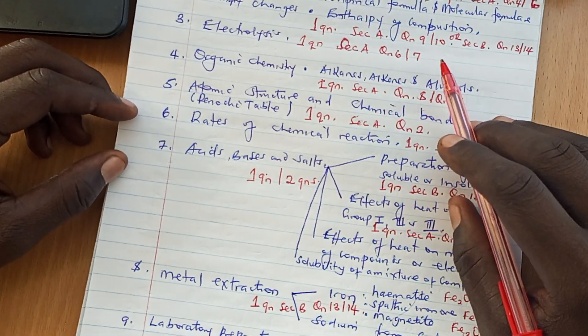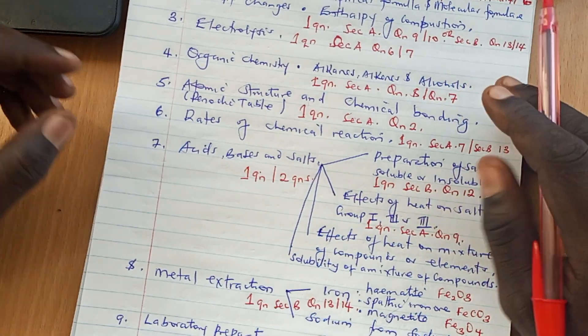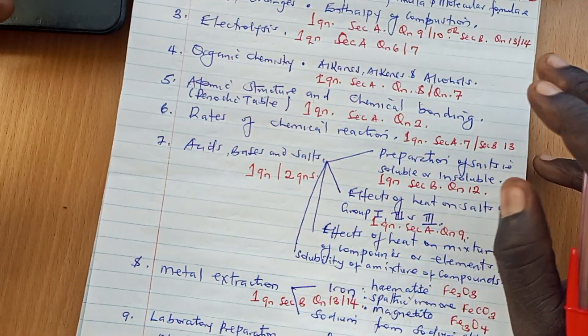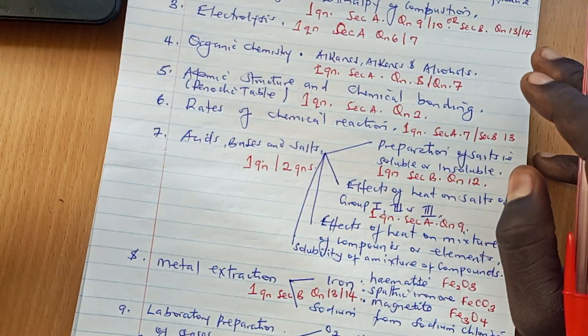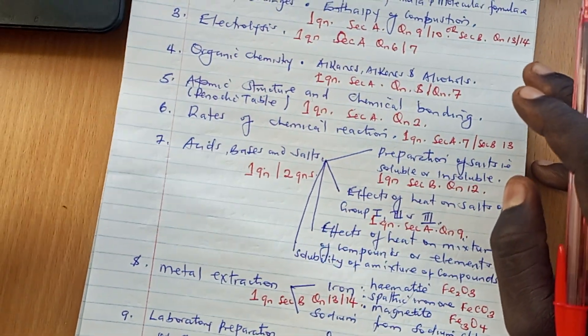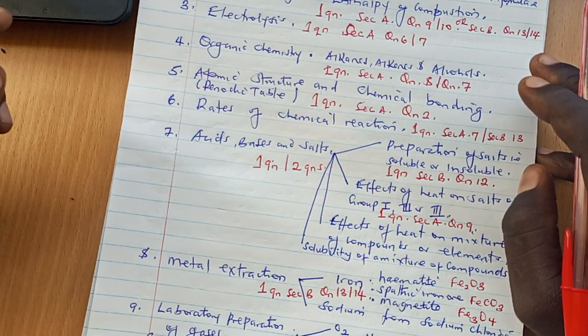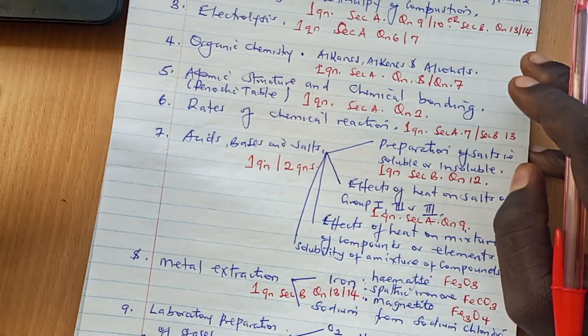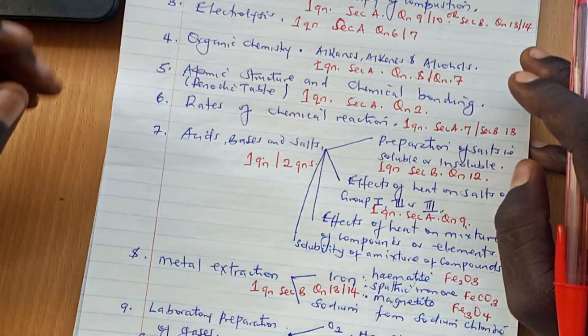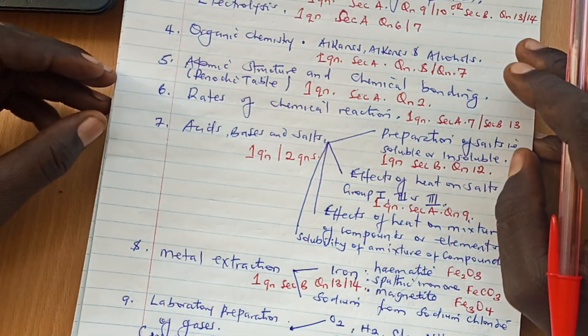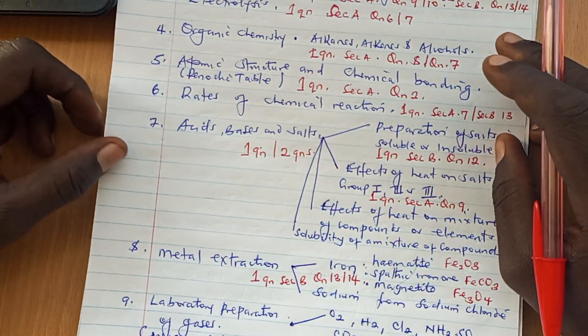The fifth topic is atomic structure and chemical bonding, or the periodic table. There is always one question on this area. As far as the current setting is concerned, that is question number 2 in section A.